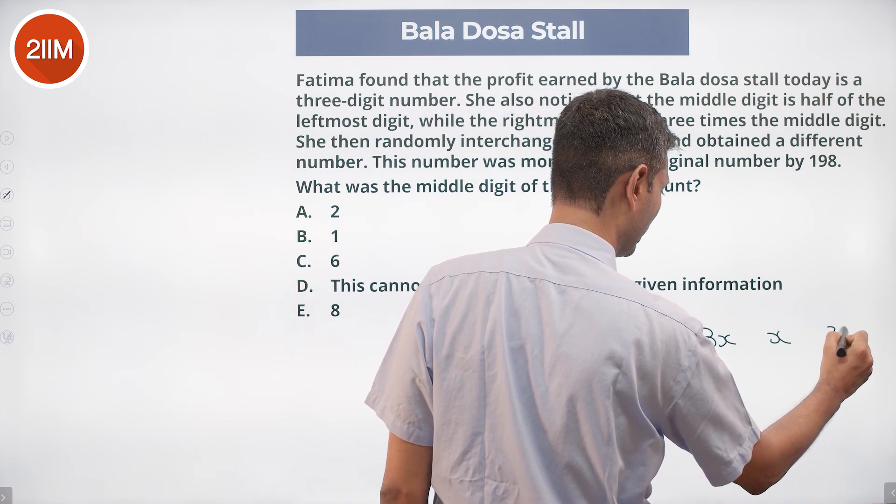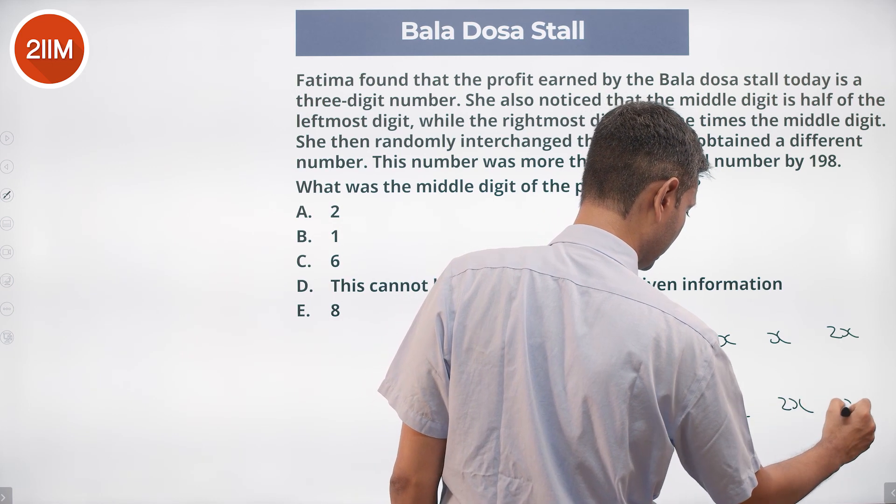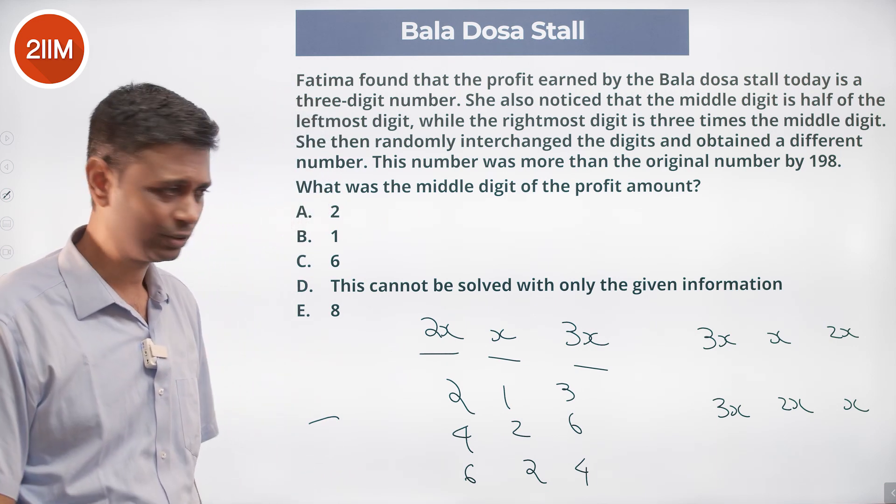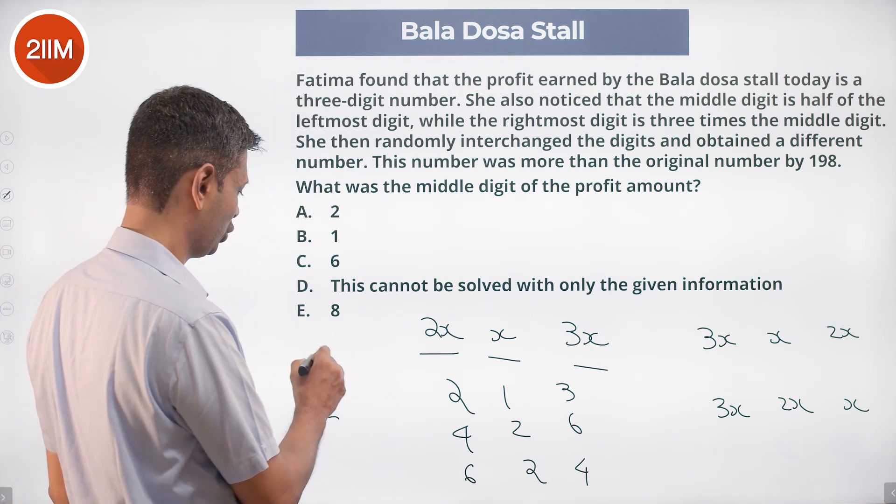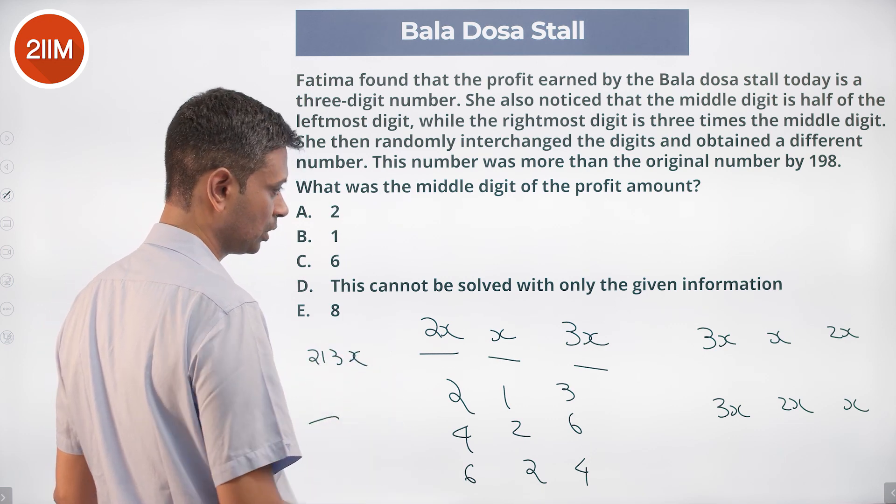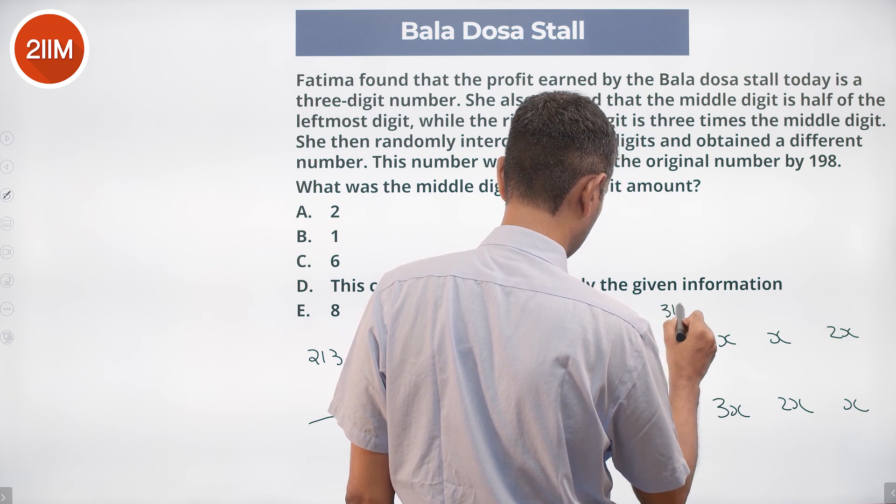Then it can have x and 2x, or it start with 3x and it has 2x and x. One of these two. So this number is 200x plus 10x, 213x. This number is 300x plus 10x plus 2x, 312x.